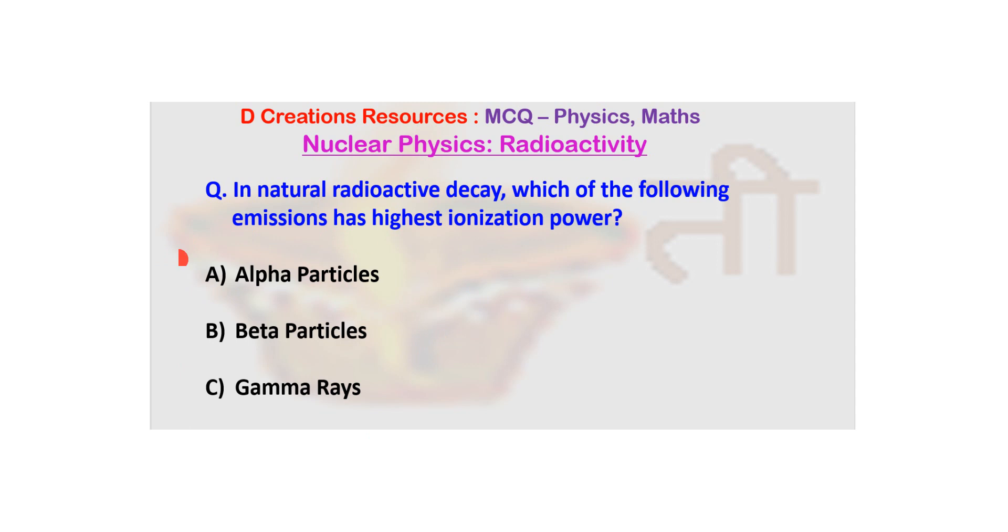So what are alpha particles? Alpha particles are basically helium nuclei in the sense that they have two protons and two neutrons. Beta particles are like electrons and gamma rays are electromagnetic radiations.